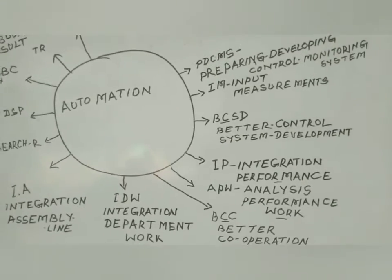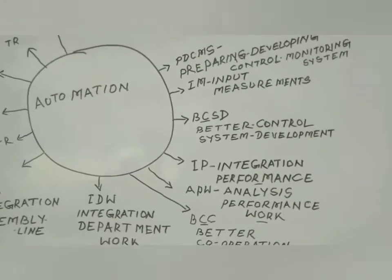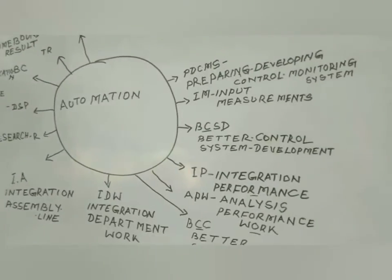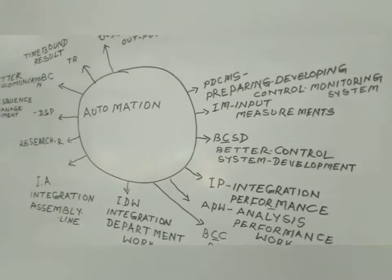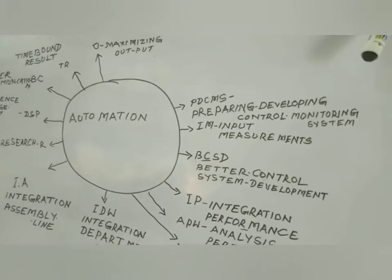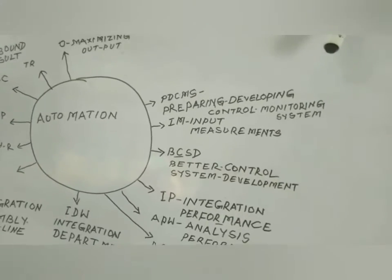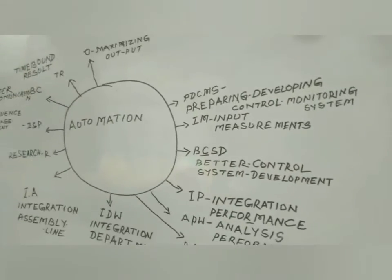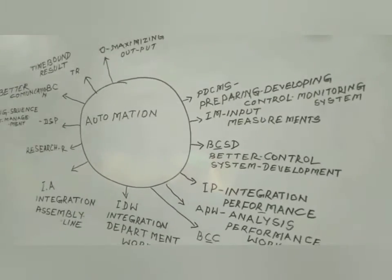Then integration with performance — this analysis will help to develop the skill and identify which part should be integrated with particular performance. Next is better control system development: which portion is required for the betterment of automation, and developing a better control system to maintain quality. Input measurement means which type of materials are utilized in a particular project and manufacturing plant.